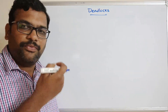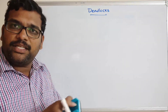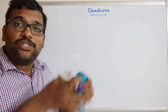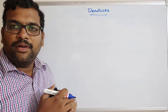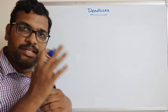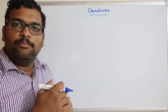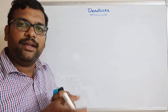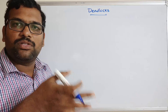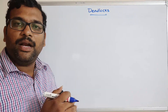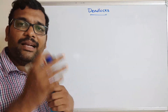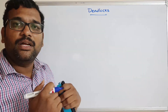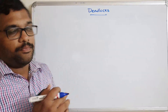Before going to deadlocks, let us discuss a few points. If any process wants to be executed, it may require some resources. The process will utilize those resources to execute itself. The operating system will allocate resources to processes based upon their availability. If a resource is not available, the process has to wait until it gets the resource. Once the work is done, the resources allocated to that process will be released.